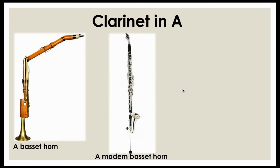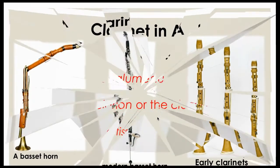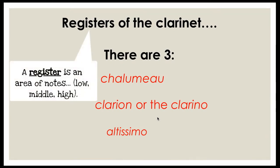A modern-day basset horn still exists — it's marginally better looking, and you can see it looks like a clarinet but is lower because of the bass extension at the bottom. These are what early clarinets looked like — a bit like a cross between a recorder and a modern-day clarinet. You'll notice there are three different sizes, which is quite an important point. There are three registers on a clarinet, and the following clip explains what those registers are called and how they sound different. You will need to know this for your GCSE Section B listening paper.